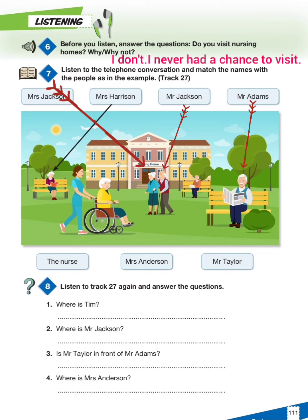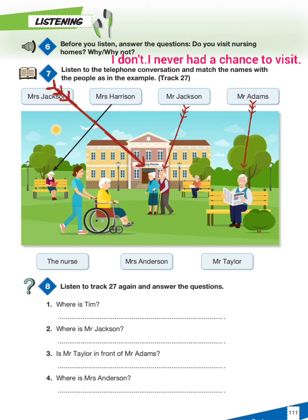Where are they now? They are in the garden. Mrs. Harrison is sitting on the bench and reading a book. Where is Mr. Jackson? He is next to Mrs. Jackson.